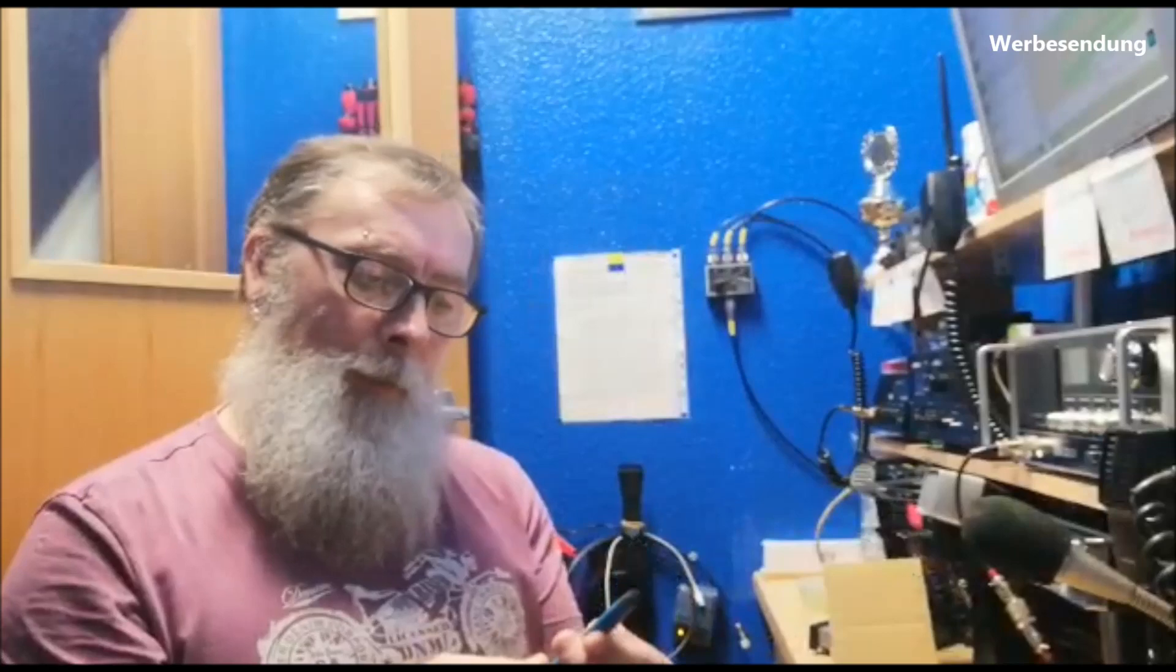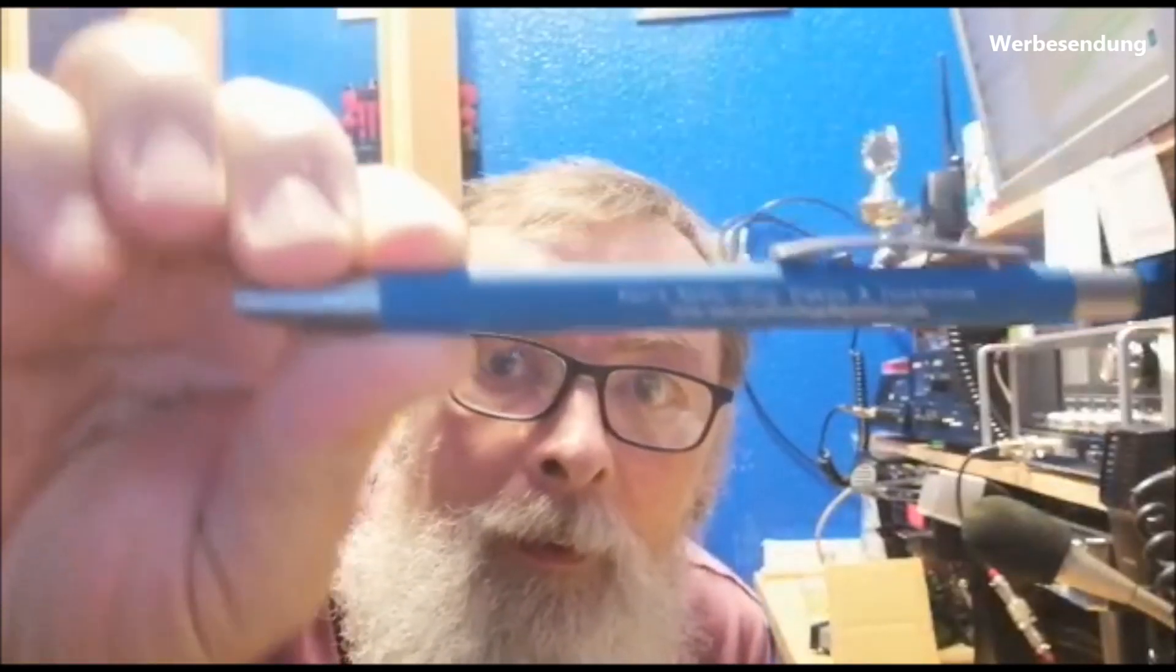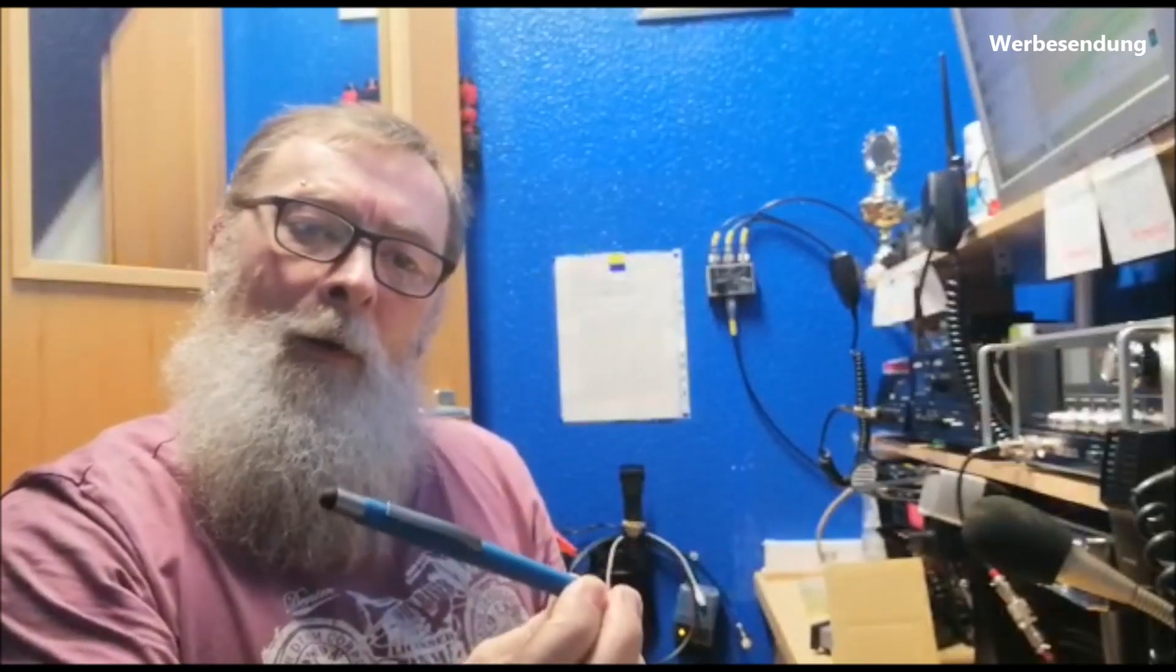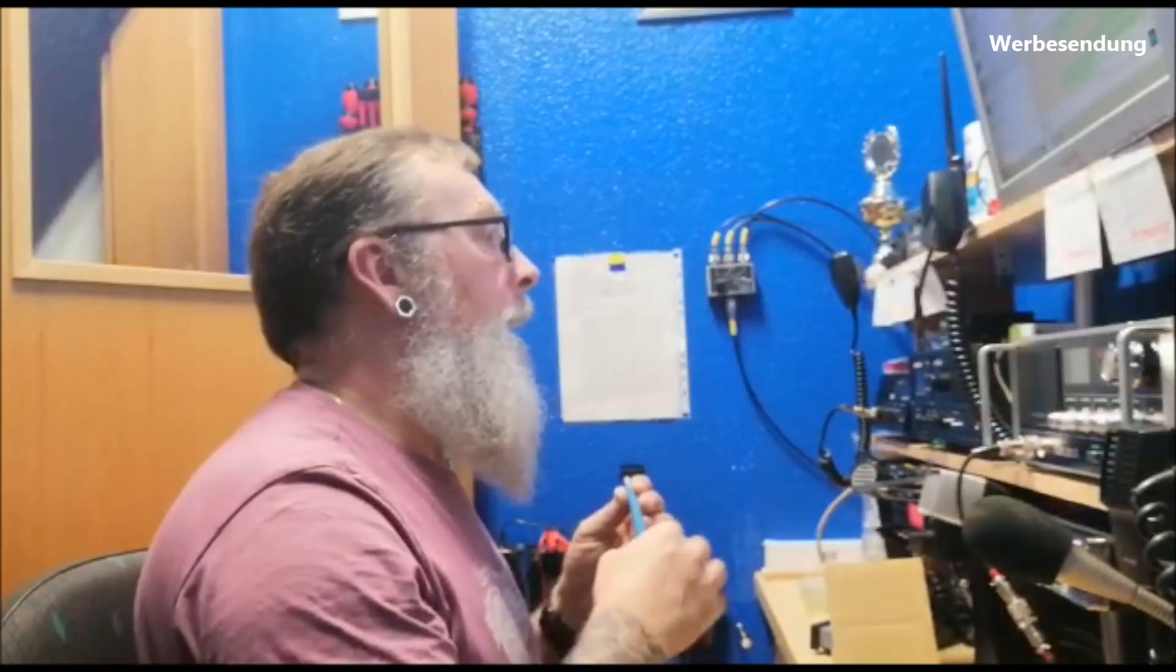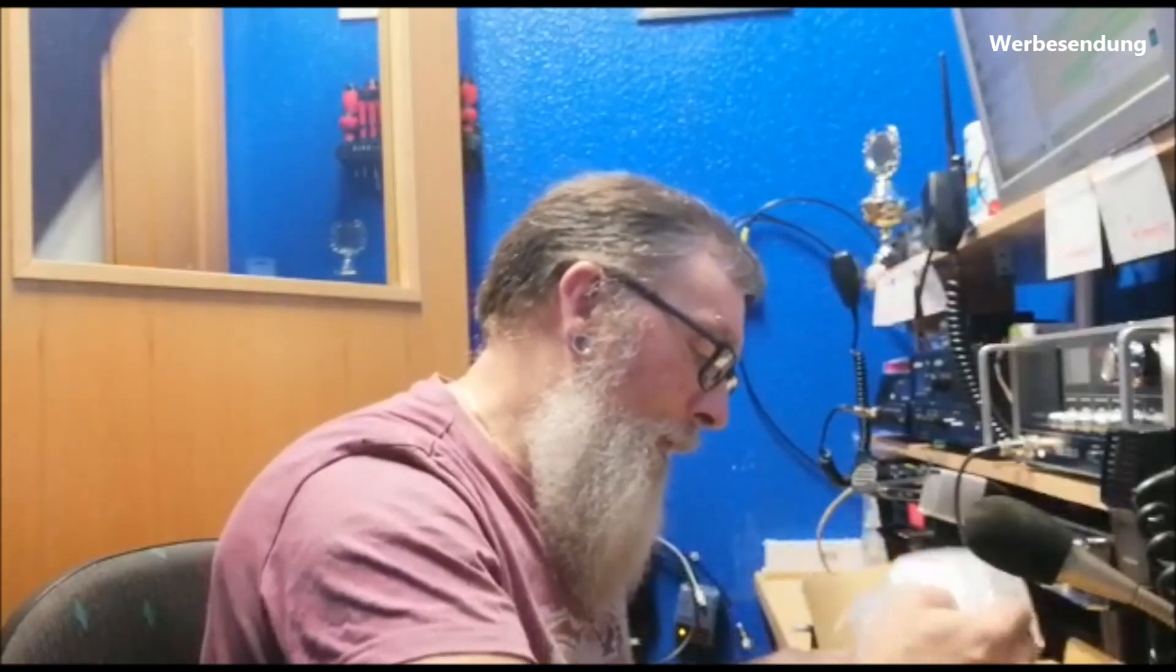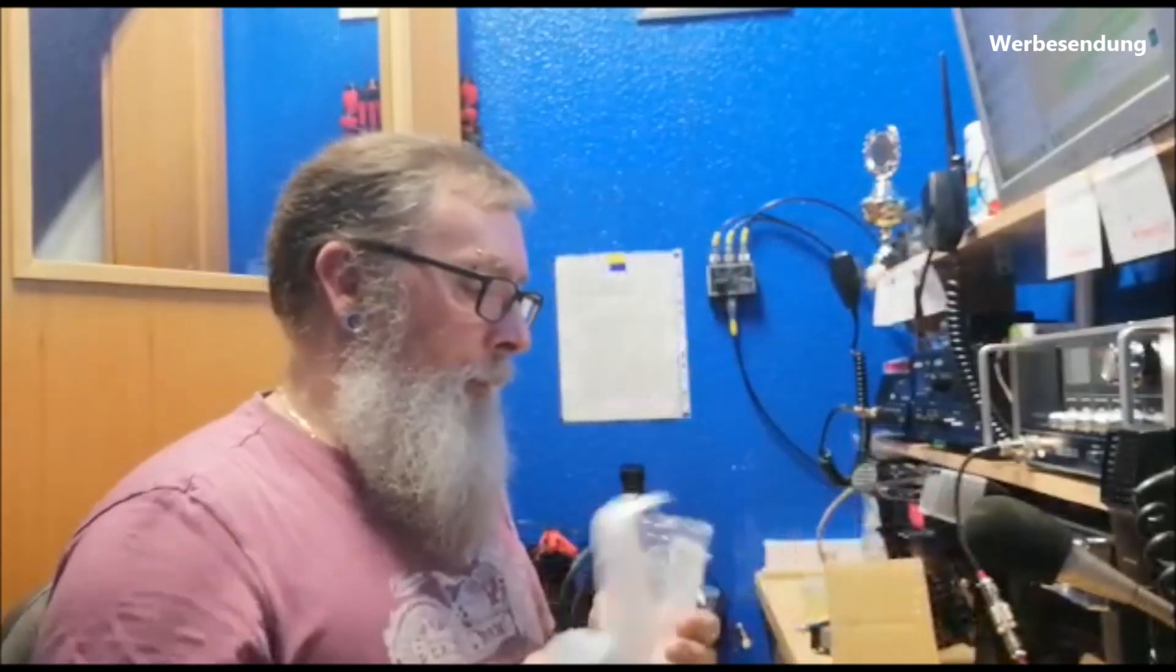Als erstes hat er mir erstmal einen schönen Kugelschreiber zugeschickt, natürlich mit Werbung. Kann man das lesen? Könnt ihr ja vielleicht am Handy vergrößern. Aber auf jeden Fall Alex Radioshow, Elektro und Funktechnik und die E-Mail Adresse. Den tue ich erstmal da hin. Ich denke mal, den wird mir meine Frau klauen, weil die steht da drauf.